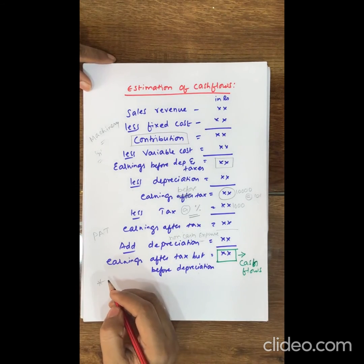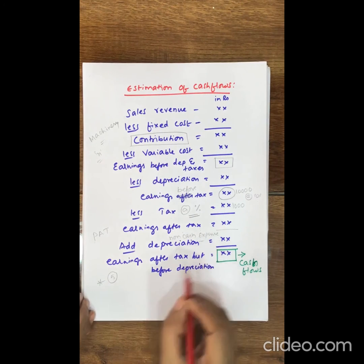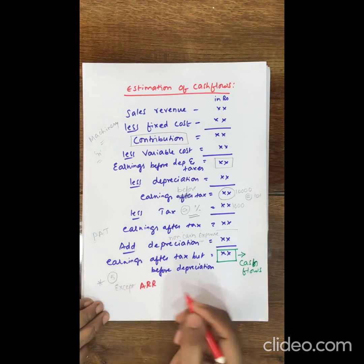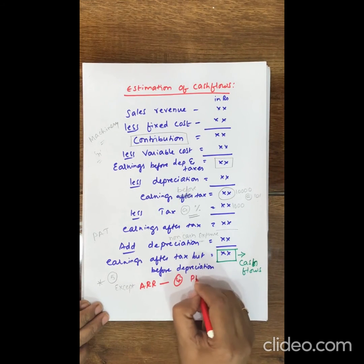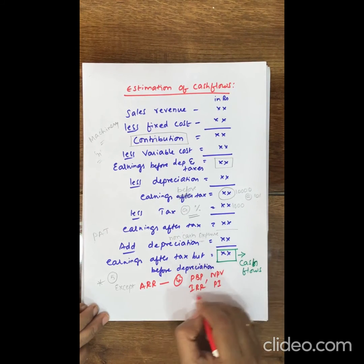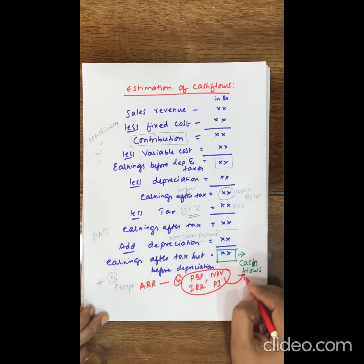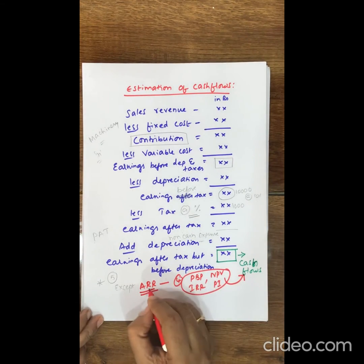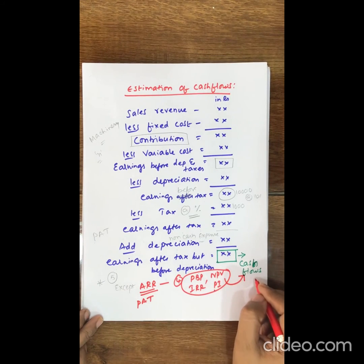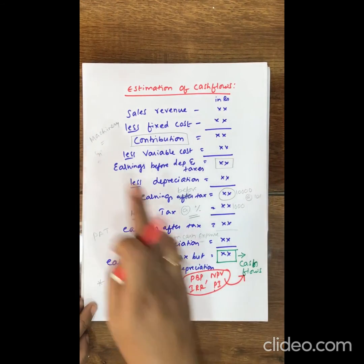Now, an important instruction: in all five capital budgeting techniques except ARR, — that is, payback period method, IRR method, NPV method, and profitability index method — we use cash flows only to evaluate project proposals. Except ARR, which considers profit after tax. All the remaining techniques consider cash flows. This is the procedure to find out cash flows generated from investment proposals every year.